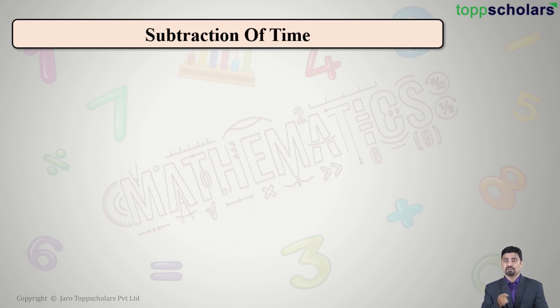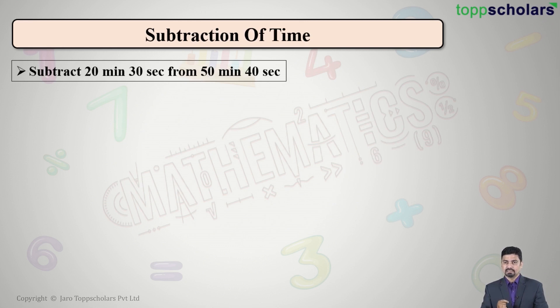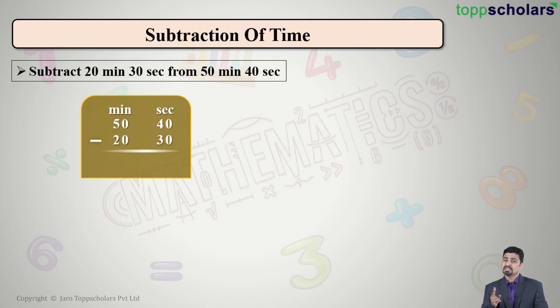So now let us take an example and understand this. We have subtract 20 minutes 30 seconds from 50 minutes and 40 seconds. So from number we'll write first and the first number we'll write second. So write down the numbers one below the other separated as minutes and seconds.